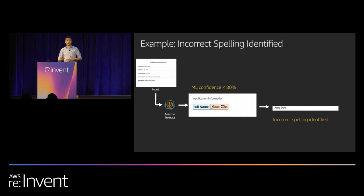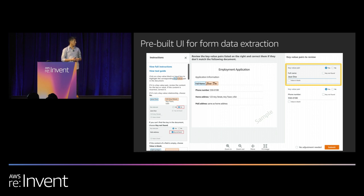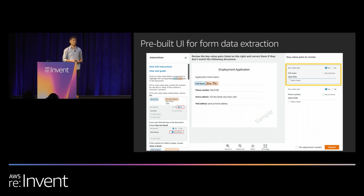Here's what this looks like with Textract. We have an application on the left, send it to Textract, and it identifies that the full name is low confidence — in this case it looks like handwriting. That gets routed to a human for review. The human sees instructions on the left panel, the actual document in the middle, and key value pairs on the right to correct or confirm. One key benefit: clicking on a key value pair on the right highlights the bounding boxes returned from Textract, helping workers be more efficient by showing the relevant ML model output.